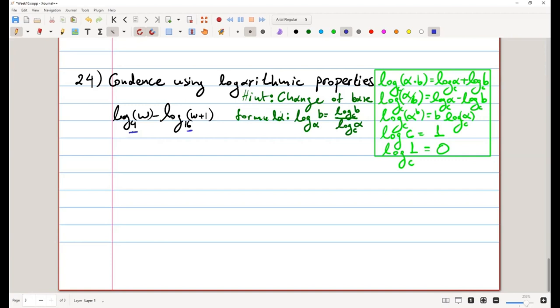Logarithm of the base that we want of the previous argument, divided by logarithm of that base of the previous base. So here, if I want to write logarithm of base 16 as logarithm of base 4, we leave the first logarithm of base 4 as it is.